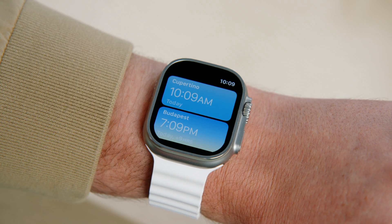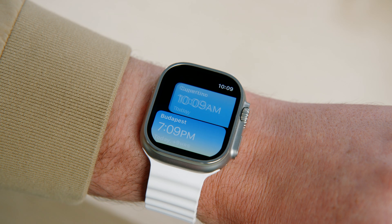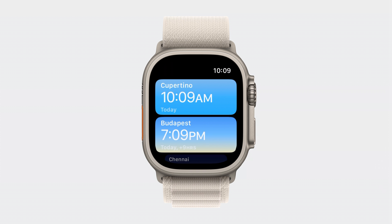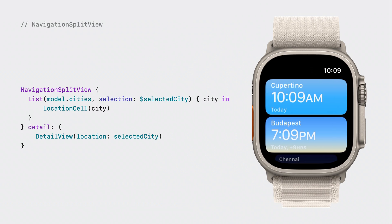Strive to make your detail view so unmistakable at a glance that it doesn't need a title. One really slick feature of Navigation Split View built right into SwiftUI is the transition between the detail view and the source list. You can tap the list icon, or even better, interact with your finger. The source list is an excellent tool for showing comparative data — it's 10:09 a.m. in Cupertino and 7:09 p.m. in Budapest. There's no need to title the source list and no need for a close button or navigation controls, allowing the source list to use a shorter navigation bar and show more comparative data at a glance. The API for Navigation Split View is the same on watchOS as on other platforms. Always initialize the selection to a value so SwiftUI can automatically launch to the detail view.